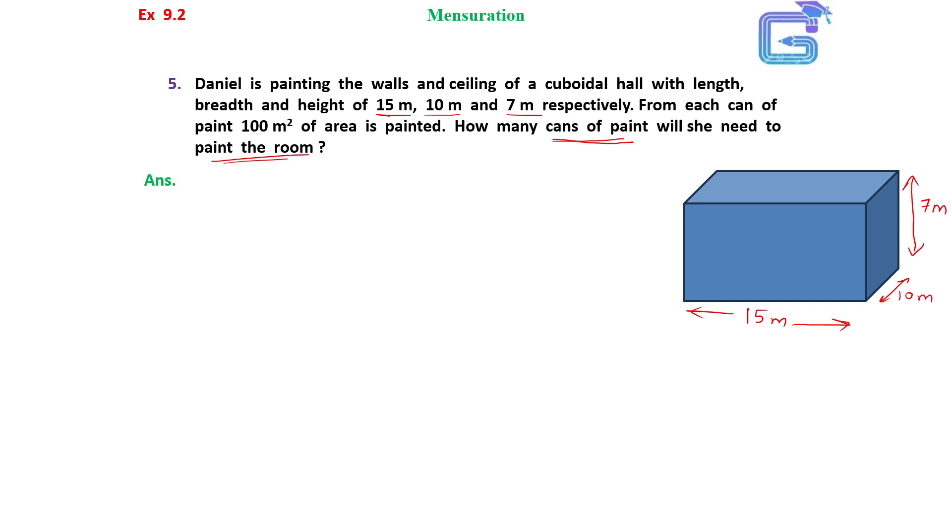Now, we have to paint the walls and ceiling of a cuboidal hall, not paint the bottom part. So, the area to be painted is equal to total surface area of cuboid minus area of floor or area of bottom part.